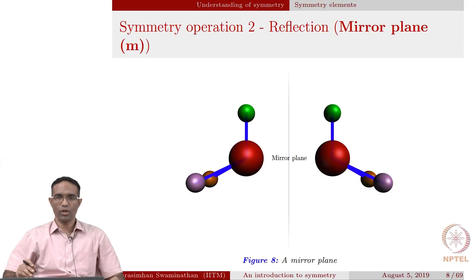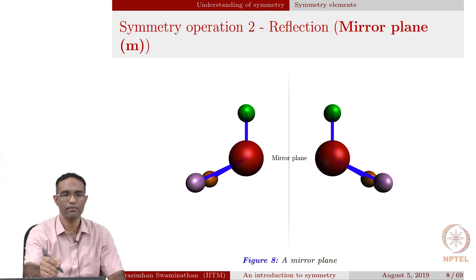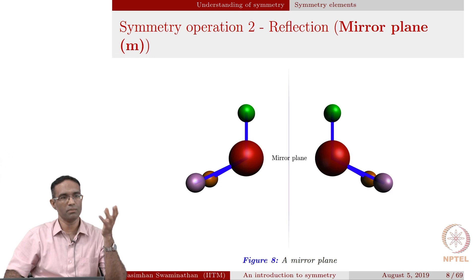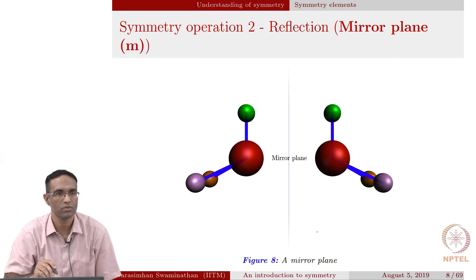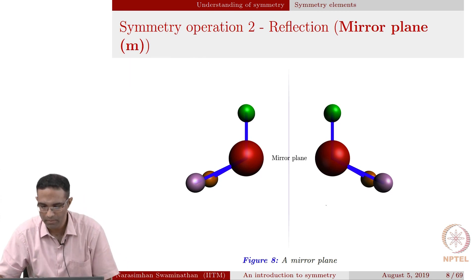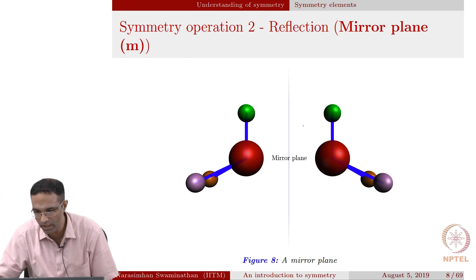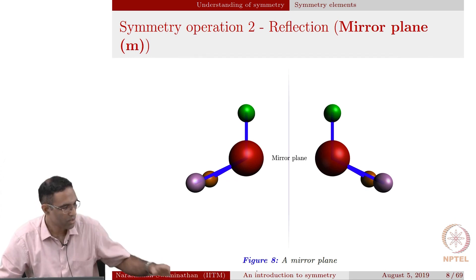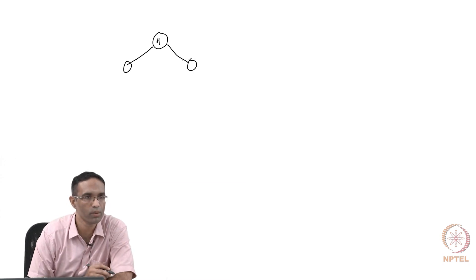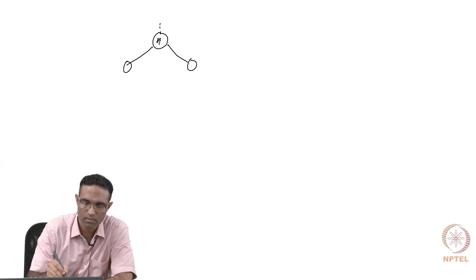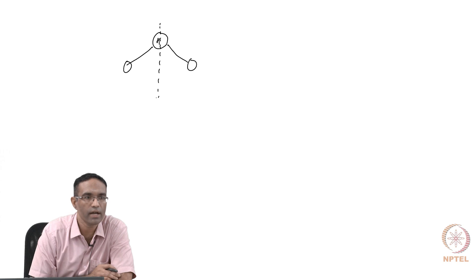The next symmetry operator after the rotation axis, which we represented by capital X, is what is referred to as the mirror plane. It is a very simple symmetry operator. This molecule possesses the mirror plane — the molecule comprises all eight atoms — and this entire molecule actually possesses the mirror symmetry. If you take a look at the H2O water molecule, it possesses mirror symmetry, and in addition to that it possesses something else.